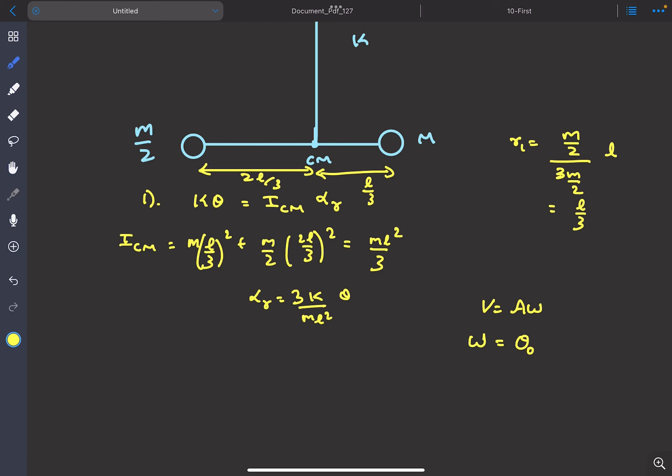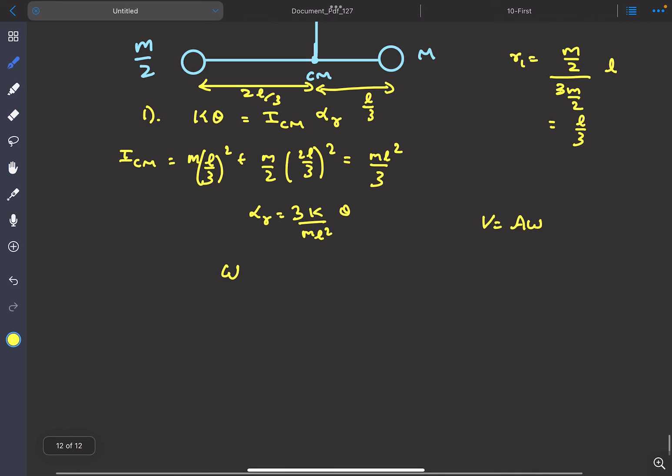And which is basically the square root of this term. So that will come out to be ω at the mean position equals θ₀ times the angular frequency, which is √(3k/mL²). So now as we have the ω at mean position,